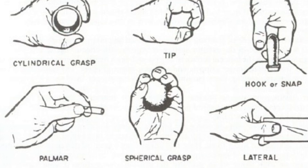Prehension involves the action of reaching for and grasping an object that may be stationary or moving. The components of prehension involve transport, reach, grasp, and object manipulation.